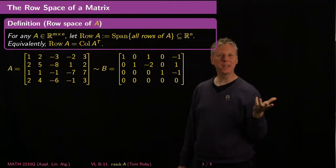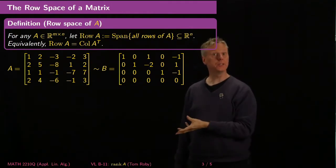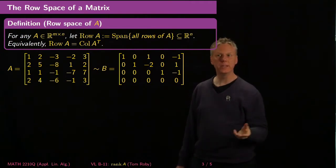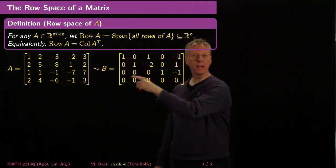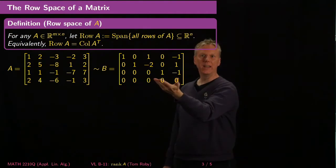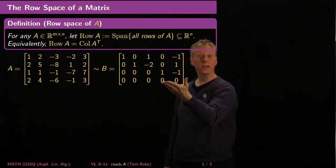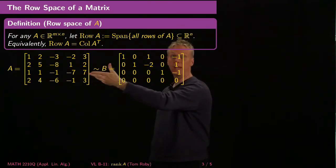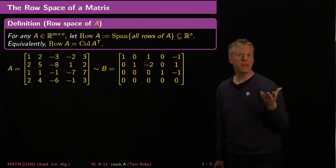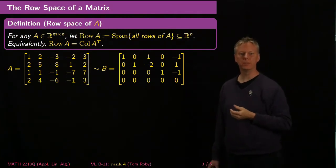The key thing here is that every elementary row operation's inverse is also an elementary row operation, so row equivalence goes back and forth. That means every vector here is a linear combination of vectors there, so the span of those vectors can't be any bigger than the span of these vectors. The spans of those sets of vectors have to be the same. That's the bottom line.